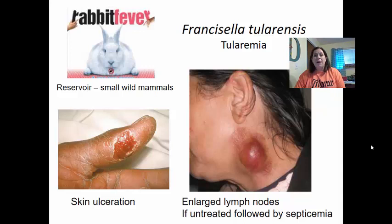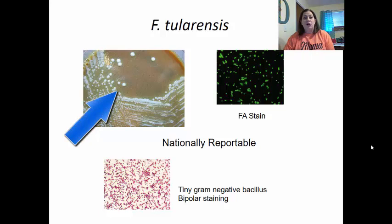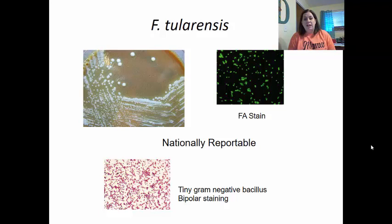When growing Francisella tularensis in the lab, colonies have a milky white appearance. It can be stained using a fluorescent antibody stain where it glows. It is a nationally reportable disease so we can control the reservoir, which includes rabbits and other small mammals. This bacteria is fastidious, meaning it has very particular growth needs, including requiring iron — one reason it can grow on chocolate agar, where iron is released from lysed red blood cells. It is a tiny gram-negative bacillus showing bipolar staining.